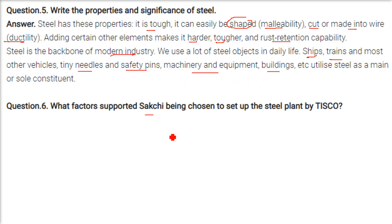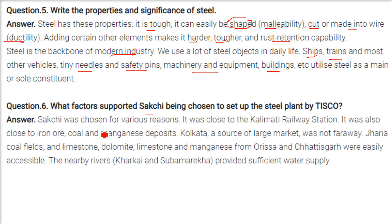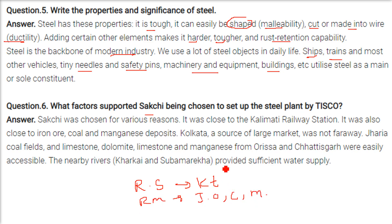What factors support Sakchi being chosen to set up the steel plant by TISCO? The reasons are: it is close to the railway station Kalimati; it is close to iron ore — raw material; coal, manganese deposits, and the large market of Kolkata are not far away; the Jhariya coalfield is nearby; limestone and dolomite from nearby areas, and manganese from Odisha and Chhattisgarh; and the rivers Kharkai and Subarnarekha provide sufficient water supply.